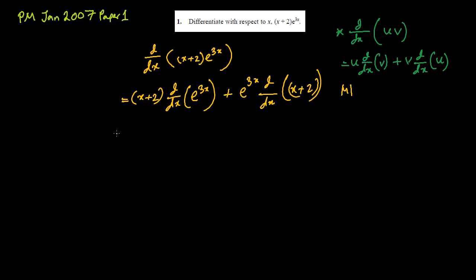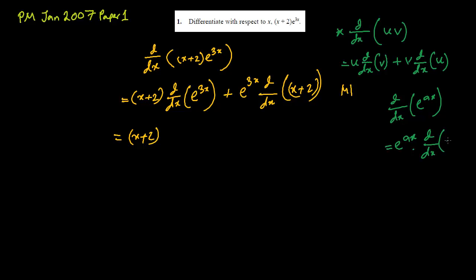Writing this out gives you one mark. Now, x + 2 remains as is, and d/dx of e^(3x): the derivative of e^(ax) is e^(ax) by chain rule multiplied by d/dx of ax. So d/dx of e^(3x) = e^(3x) · 3, which is 3e^(3x). And d/dx of (x + 2) is 1, since d/dx of 2 is 0.